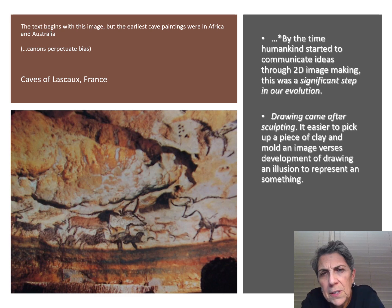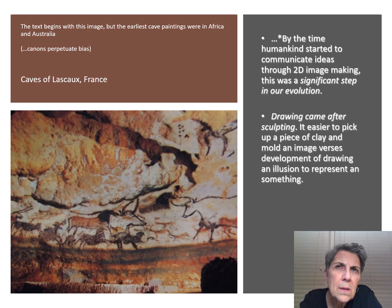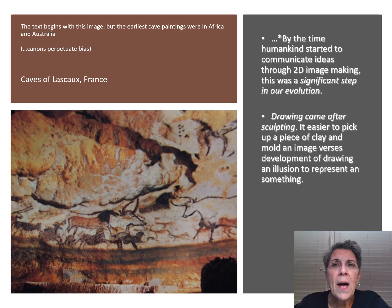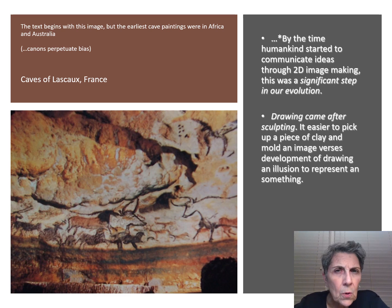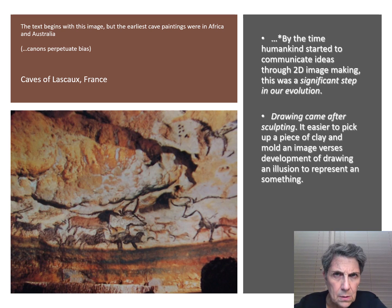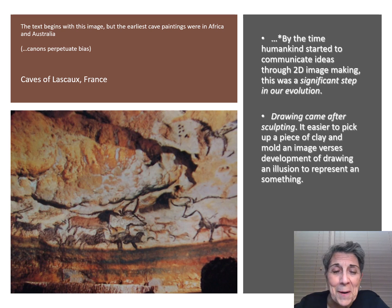The second point: these drawings did not come before sculpture. People made sculptures first, because it's easier to pick up a piece of clay and mold a form in your hands than to have an idea about how to represent animals running and then draw that and create that illusion on a wall. Sculpture comes first — tools, sculpture, making things with our hands — and then this concept of making illusionistic images is actually a big leap in our evolution.